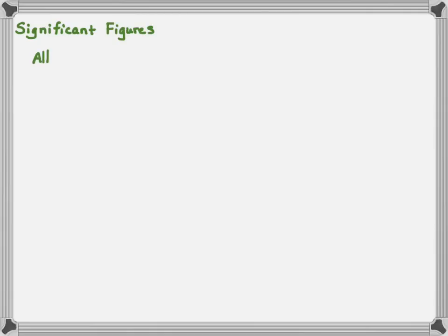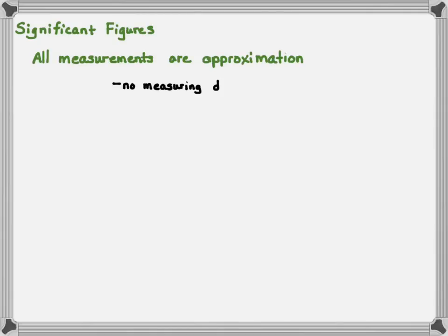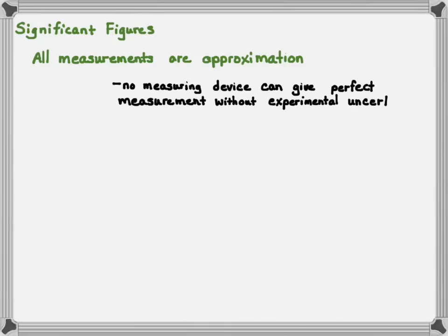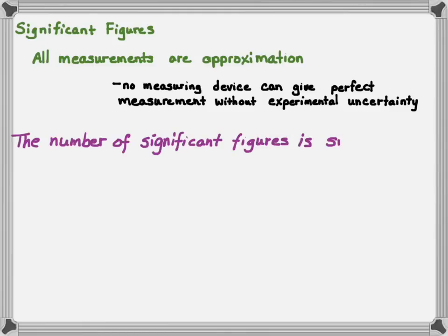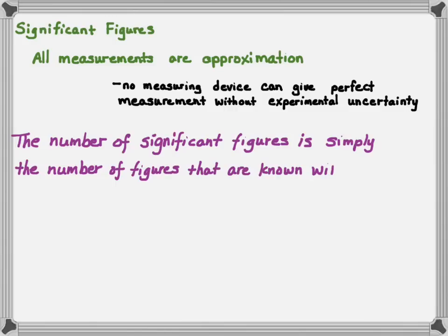Let's talk about significant figures. All measurements are going to be approximations because there's no device that can give us a perfect measurement. There will always be some type of experimental uncertainty in my measurement. So the number of significant figures is simply the number of figures that are known with some degree of certainty.